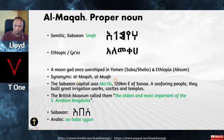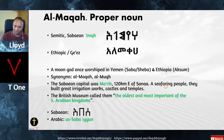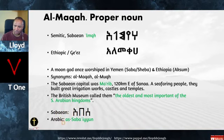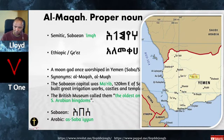The Sebaean capital was Marib, 120 kilometers east of Sana'a. They were a seafaring people who built great irrigation works, castles, and temples. A British Museum installation called them the oldest and most important of the South Arabian kingdoms. In Arabic, the Sebaeans are called the As-Saba'iyun. This is where Marib was — the old capital of this region — and this is Sana'a, the capital today. You can see Ethiopia is just across the water.